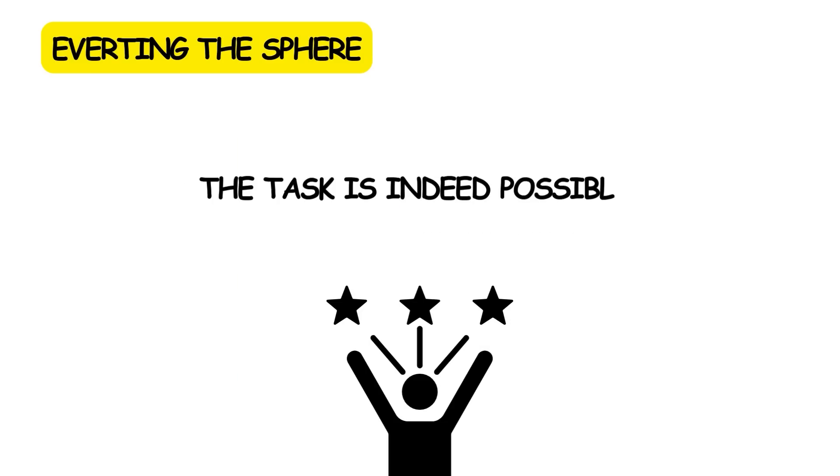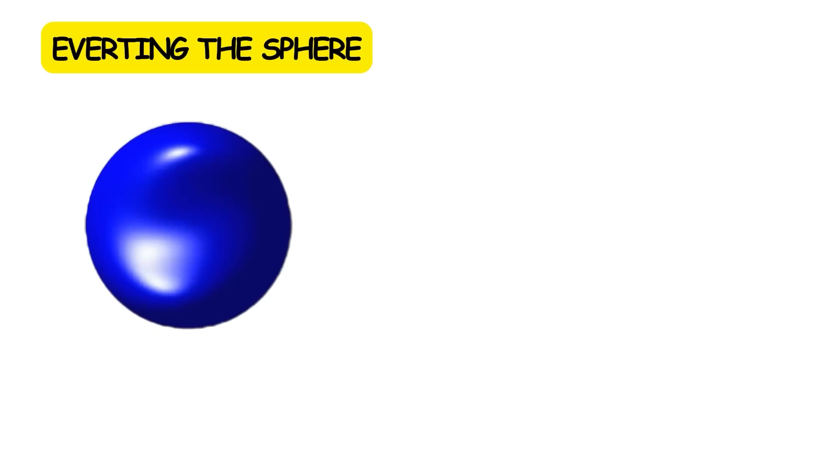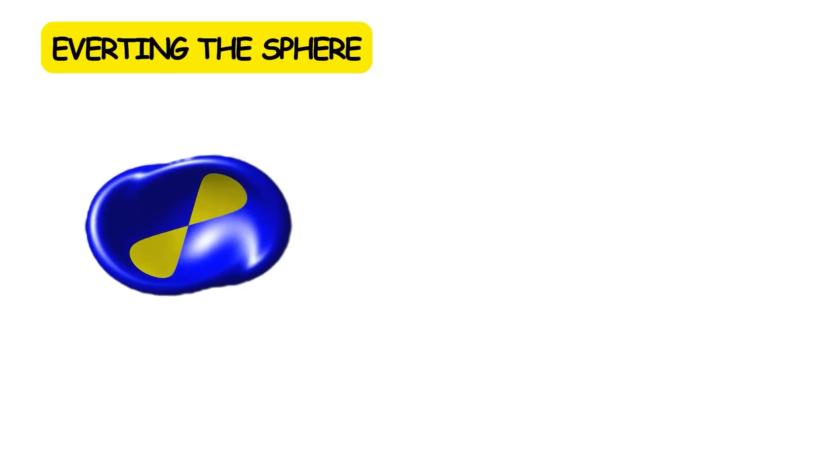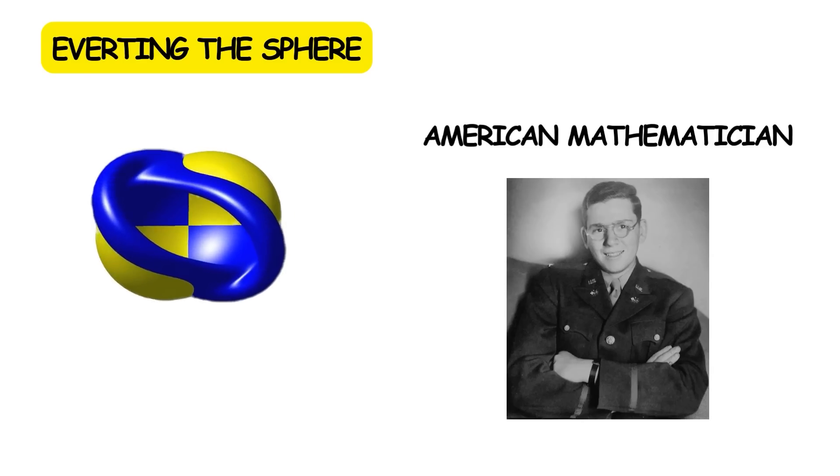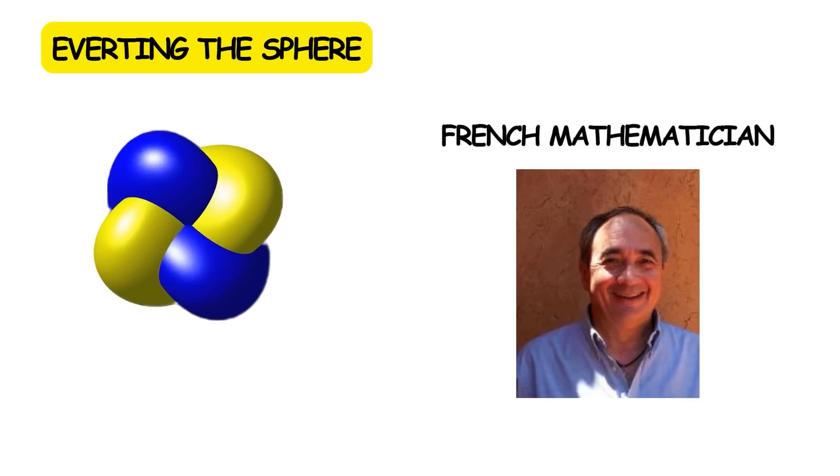Perhaps counterintuitively though, the task is indeed possible. This fact was first proven by American mathematician Stephen Smale in 1957. Practical methods for everting the sphere would later be developed by several other mathematicians, such as American mathematician Arnold S. Shapiro and French mathematician Bernard Morin, the latter of whom was blind.